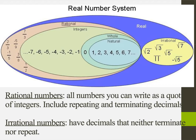Alrighty, let's take a look at the real number system. We've got all sorts of different ones. Let's just look at the names: we've got natural, whole, integers, rational, irrational — and those are all a part of real numbers.